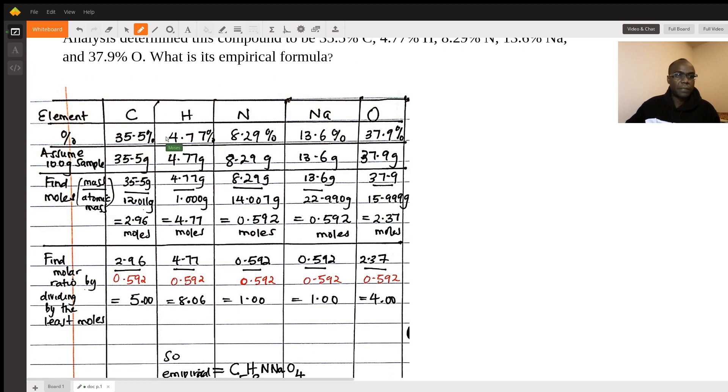Because you're given the percentages, there's no way you can work with this. So you have to assume 100 grams sample because you have 100 percent of a sample. Assume 100 grams of a sample, which means that 35.5 percent will be 35.5 grams. 37.9 percent will be 37.9 grams.